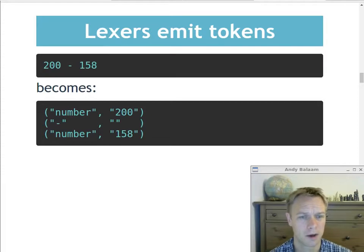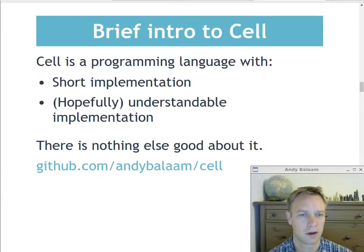Here's another example. There's some source code at the top, which is just 200 minus 158, and we break that up into tokens, and the type of the first token is number, and its contents is 200. And then we have a minus sign, and then the type of the second token is number, and its contents is 158.